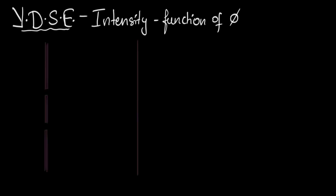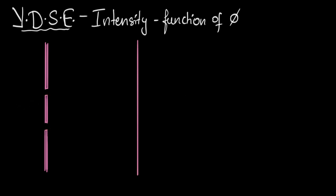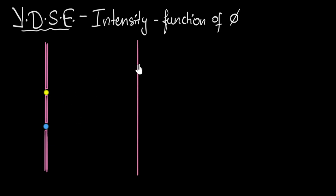You may be by now familiar with the setup. We have two holes, and there's a light source behind it, and the light hits the two holes. They act like coherent sources of light, and then the light meets on the screen at different places to produce an interference pattern. And what we want to do now is figure out when they meet at every point, what will be the intensity or the brightness of the light?